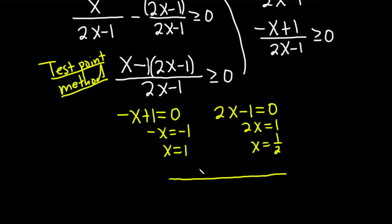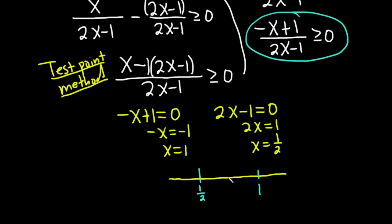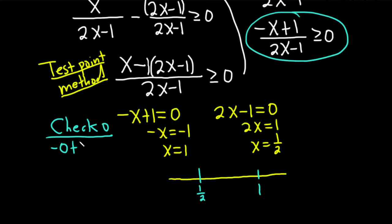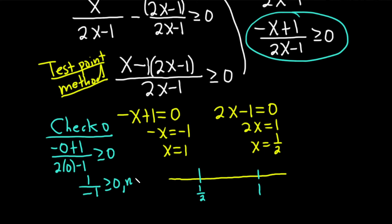We place 1 half and 1 on a number line. Then we pick test points in each region and plug them into our inequality. Testing x equals 0 in the left region: negative 0 plus 1 over 2 times 0 minus 1 gives 1 over negative 1, which is not greater than or equal to zero. So we don't shade to the left of 1 half.